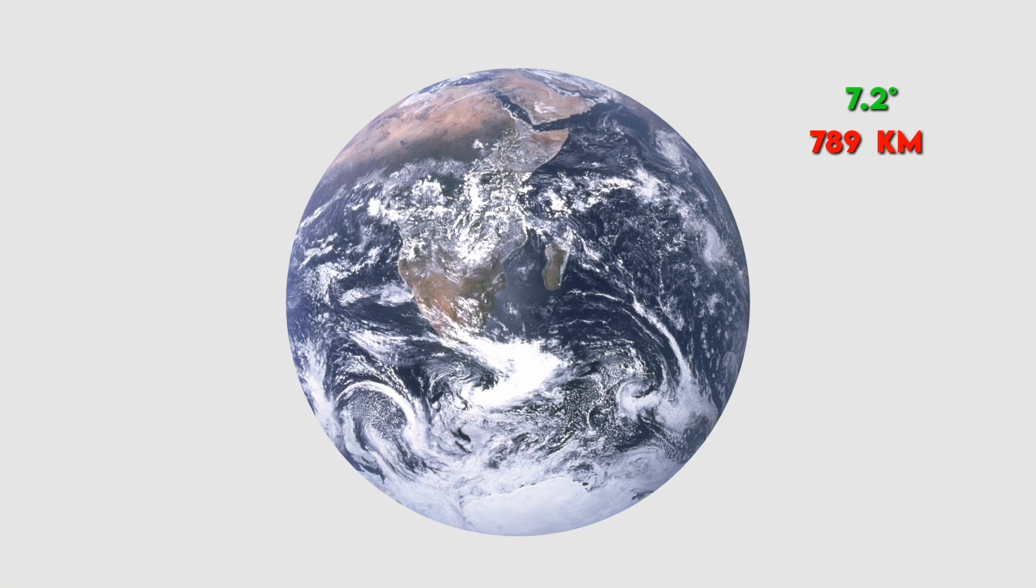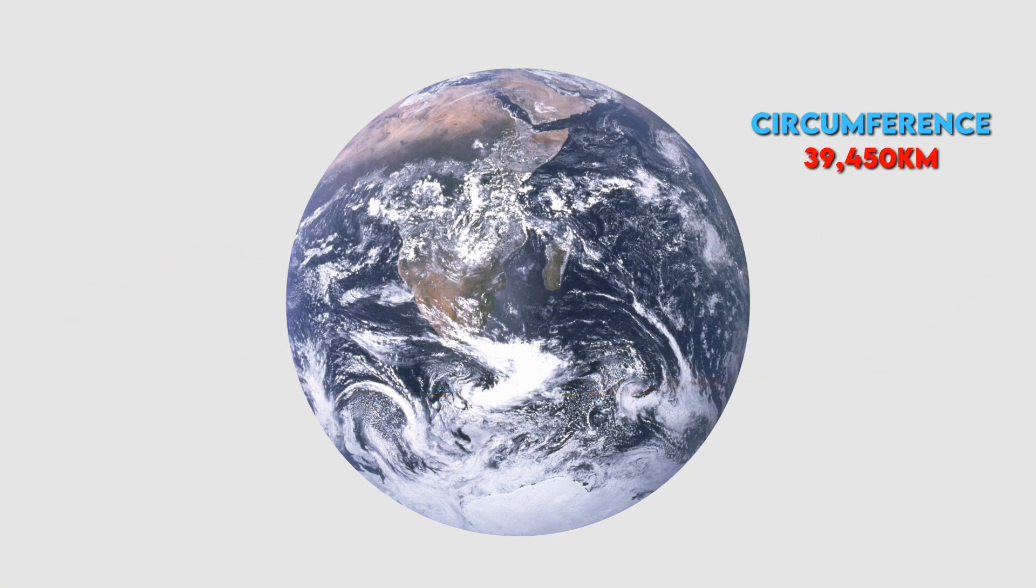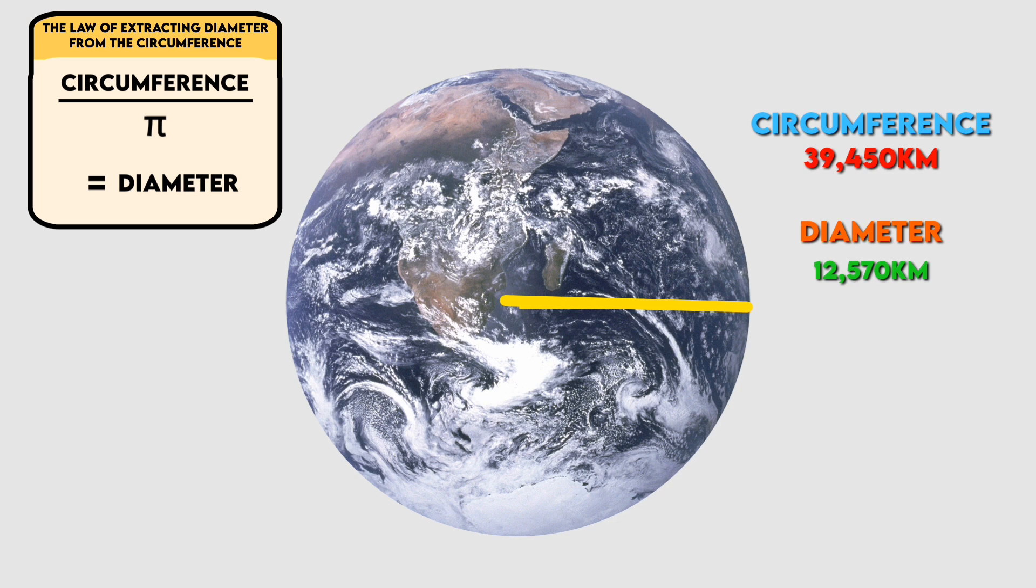Using a proportion, he estimated that the full 360-degree circumference of the Earth would be approximately 39,450 kilometers. From this, he derived the Earth's diameter as 12,570 kilometers.